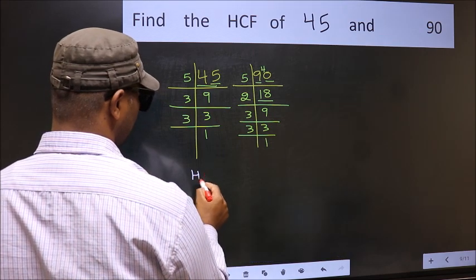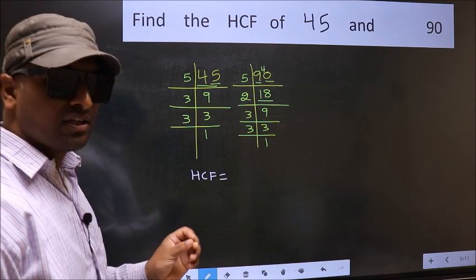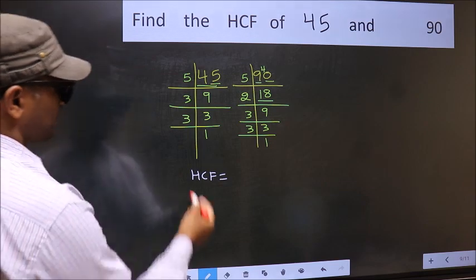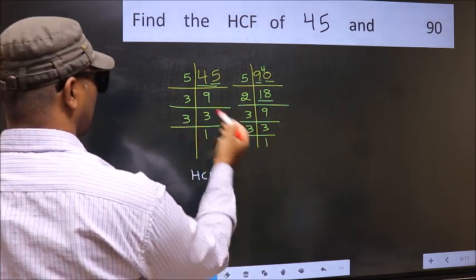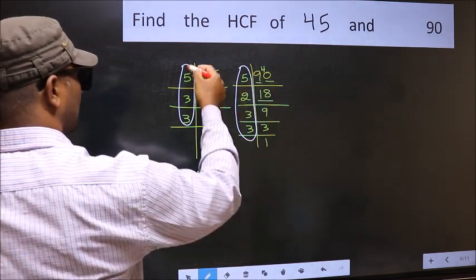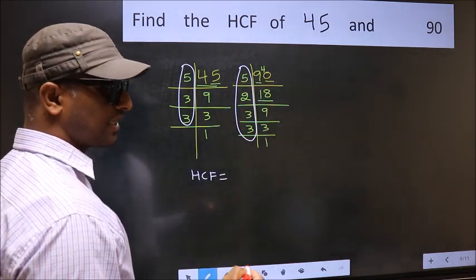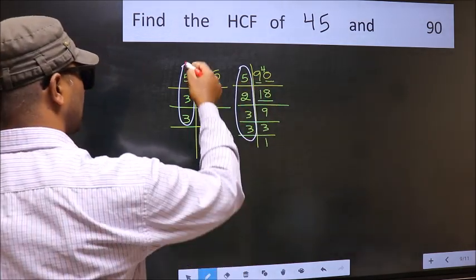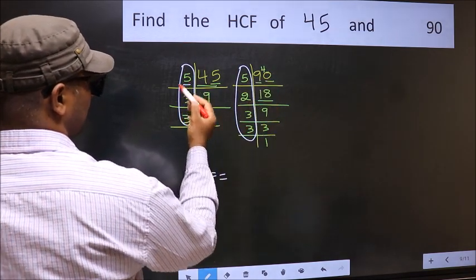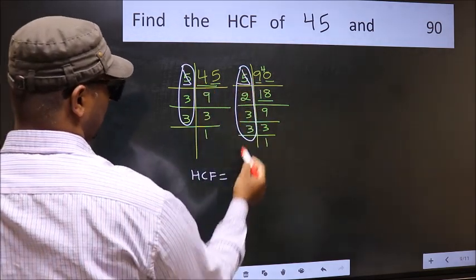Therefore, the HCF is the product of the numbers which are present in both factorizations — that is, present here for 45 and also here for 90. Starting with the number 5: do we have 5 in both? Yes. So we mark 5 as a common factor.